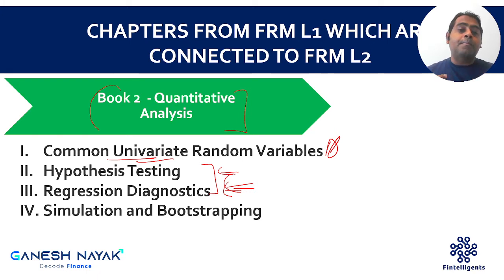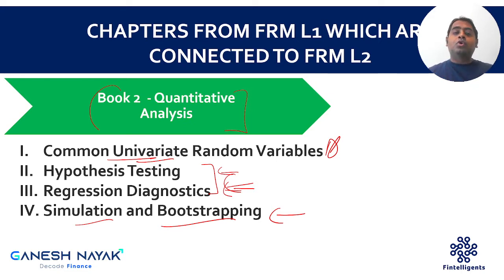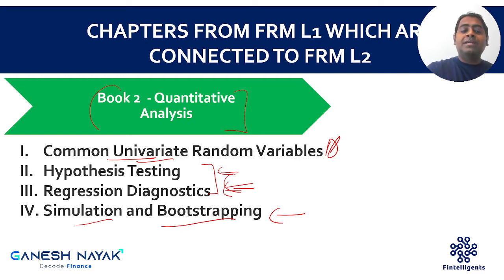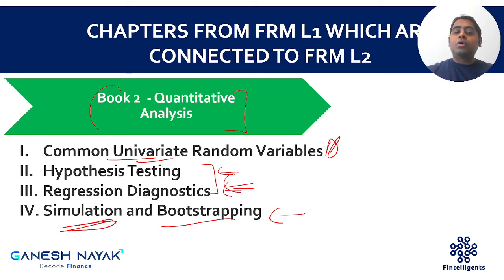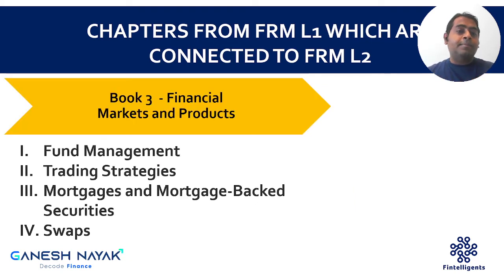Also, Simulation and Bootstrapping — in Level 2, many chapters discuss Monte Carlo simulation in detail: running a model, discussing its advantages and disadvantages. This becomes easy to understand if you at least understand the simulation part. So from Book 2, these four chapters are directly connected to Level 2. Please make sure you revise them properly.